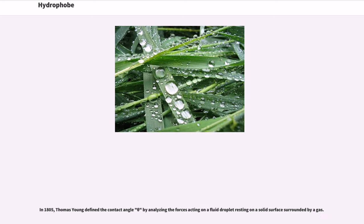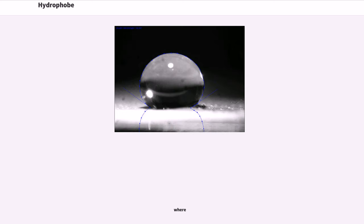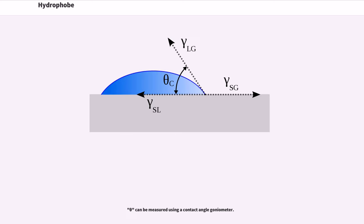In 1805, Thomas Young defined the contact angle theta by analyzing the forces acting on a fluid droplet resting on a solid surface surrounded by a gas. Theta can be measured using a contact angle goniometer.